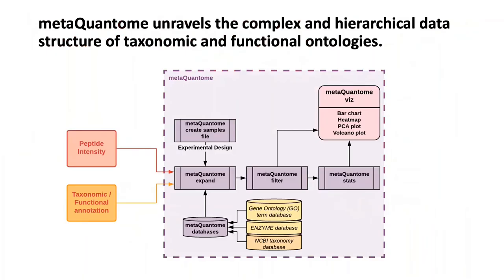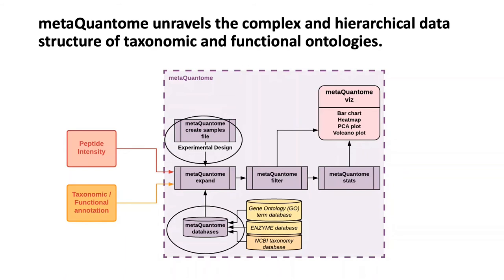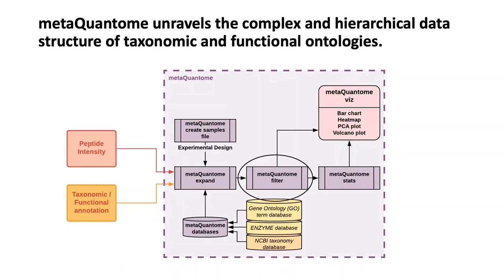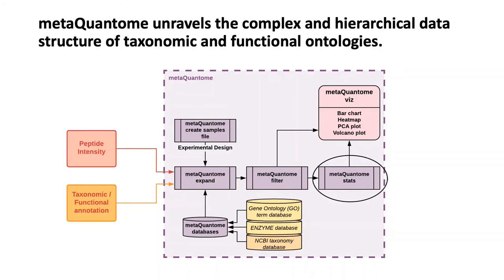MetaQuantum has several modules within itself. The four required inputs are peptide intensity, taxonomic and functional annotation, MetaQuantum sample, and MetaQuantum databases. The first step is the expand module, wherein we expand the set of original annotations to include all the ancestors of the direct annotation. Next, we filter the peptides according to user-defined threshold. Next, we perform statistical analysis. Lastly, visualization, wherein we get a bar chart, heat map, PCA plot, and volcano plot as the output.